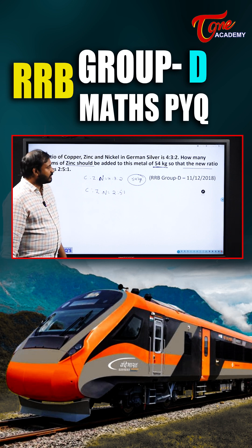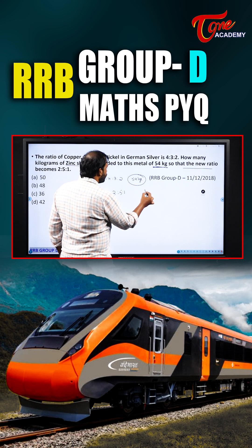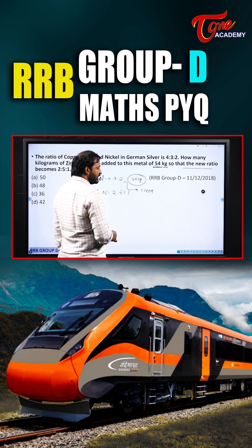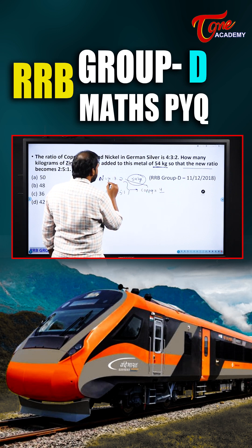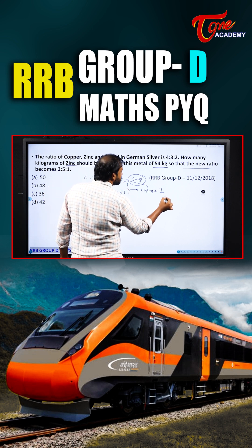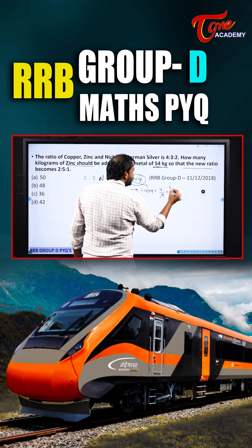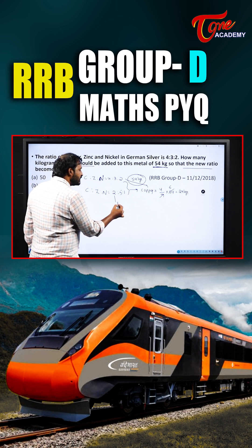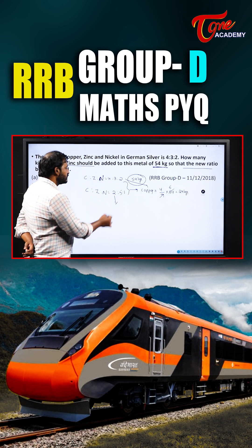First, find out the copper portion. Copper is the same in both cases because copper is unchanged. So copper = 4 out of total 9 parts, multiplied by 54 kg. That gives 24 kg. In this 54 kg, 24 kg will be copper — and the same 24 kg will be there in the new mixture as well.